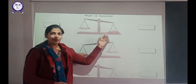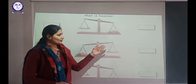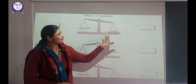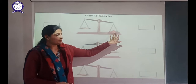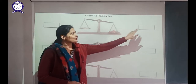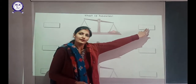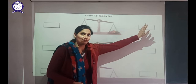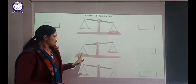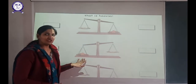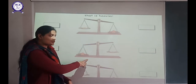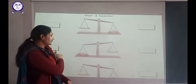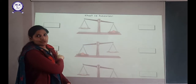In this worksheet with a weighing balance, you need to identify the heavy object. This is a heavy object, so it goes down. Write 'heavy' here. In this picture, the pan goes down, so this is a heavy object — you have to write H here.